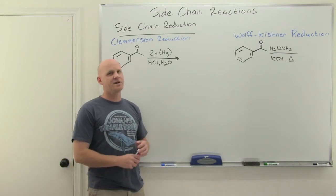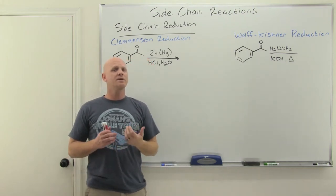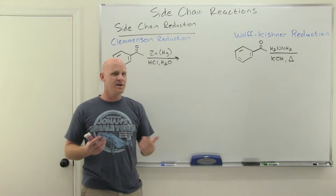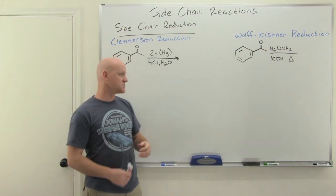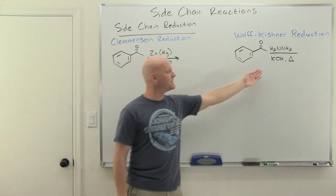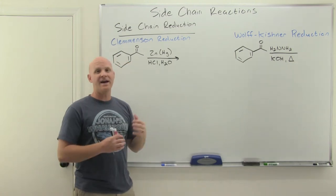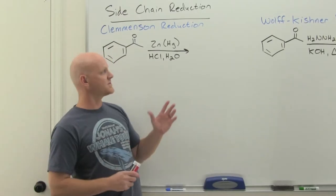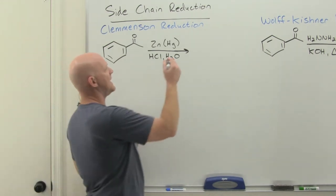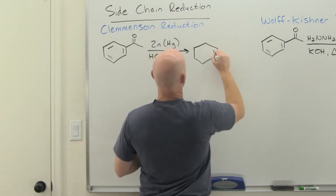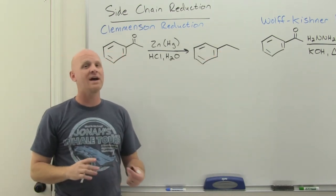Now we're going to take a look at side-chain reductions. The first two reductions are called the Clemmensen reduction and the Wolff-Kishner reduction. Initially they're going to appear very interchangeable — and in most cases they are. But every once in a while a professor will make a point of when you need to use one versus the other, because one is carried out under acidic conditions and one under basic conditions, which makes a pretty profound difference in a couple of key places.